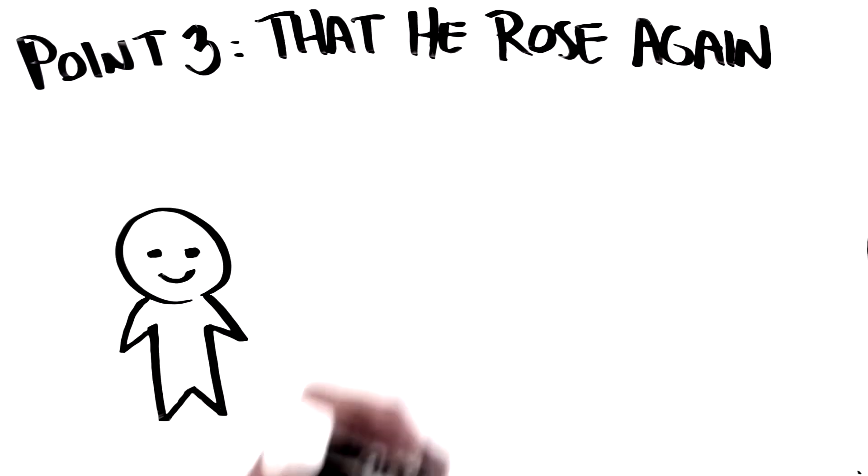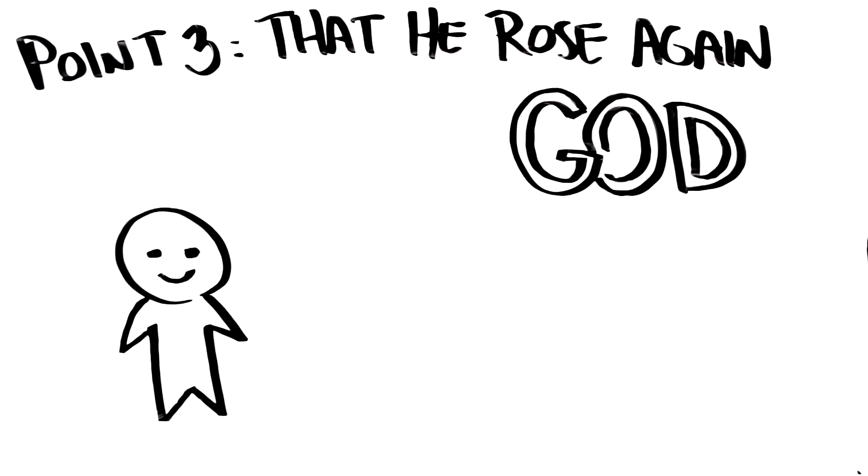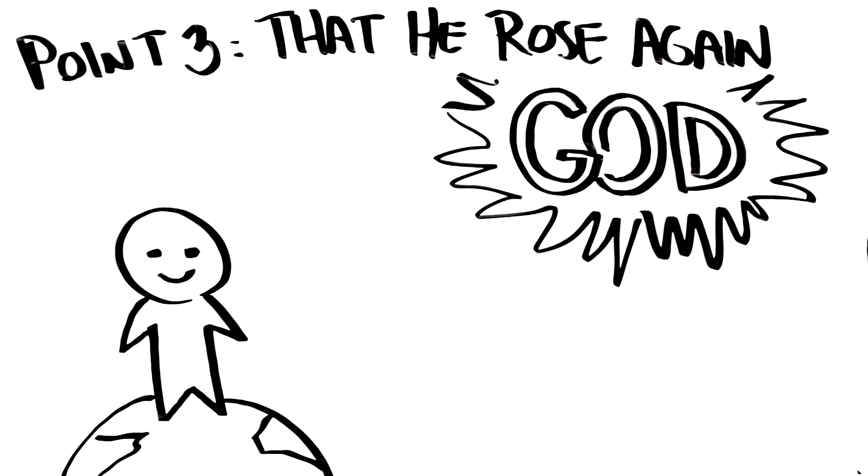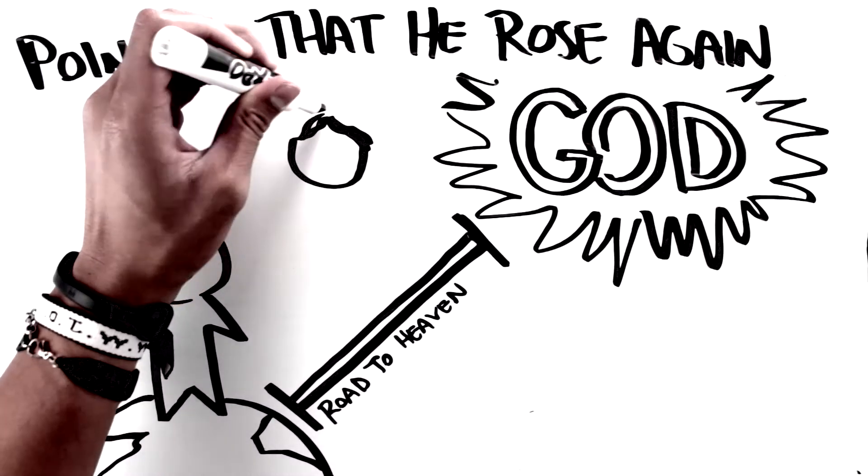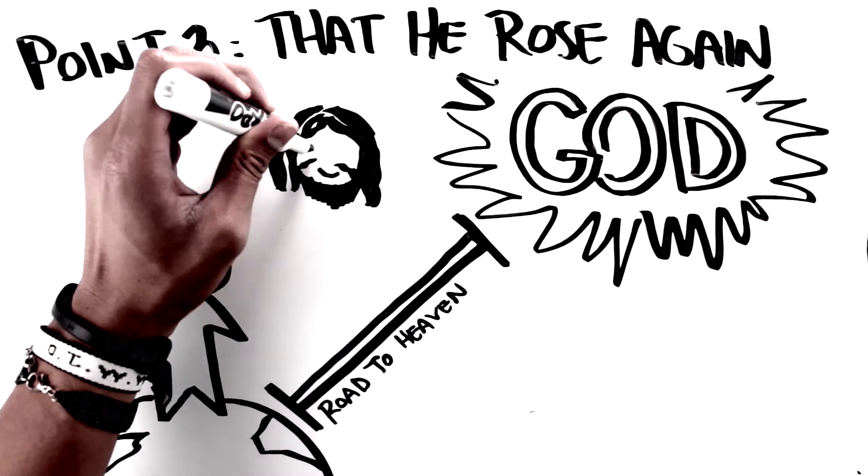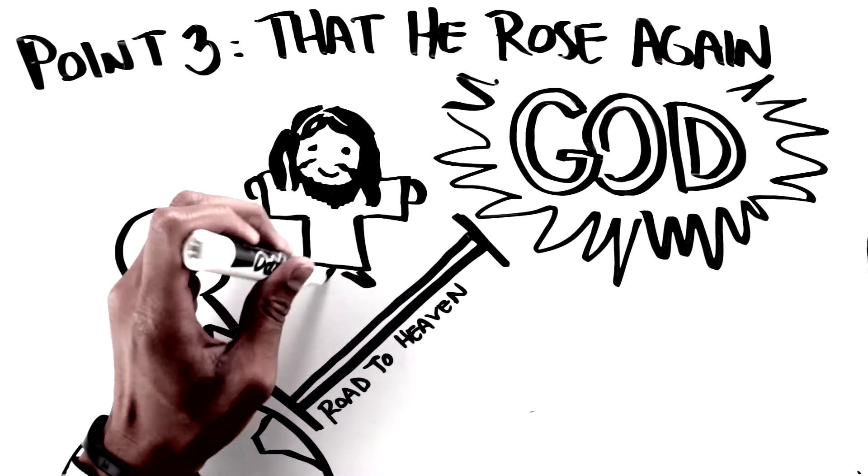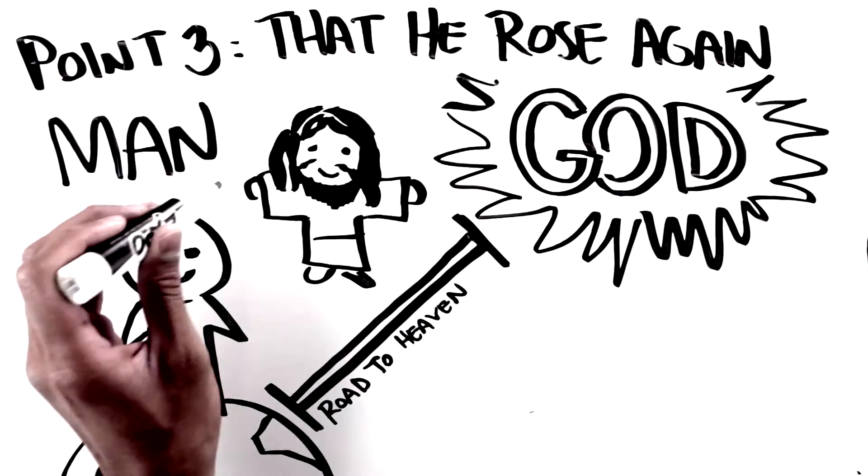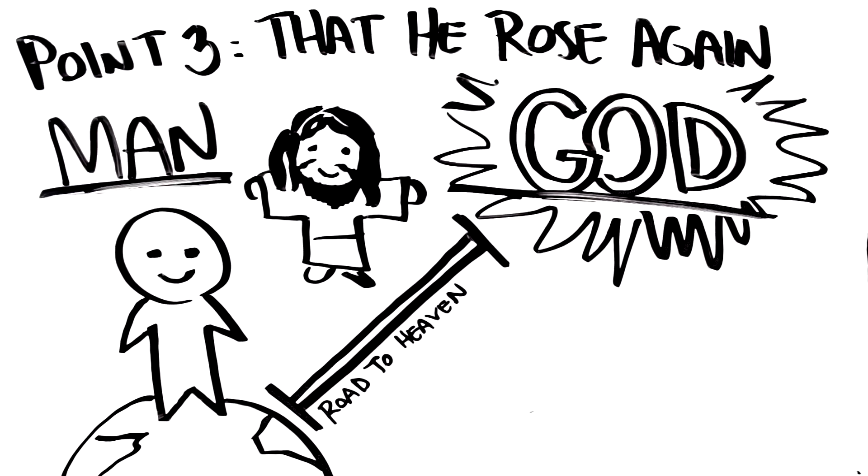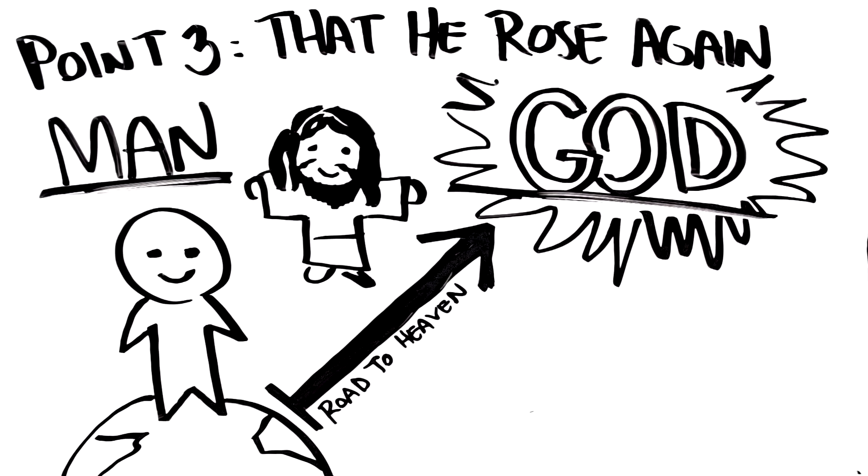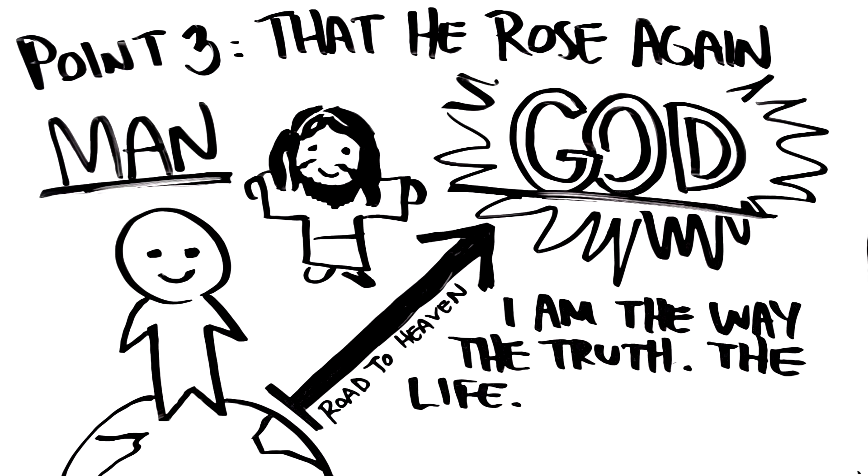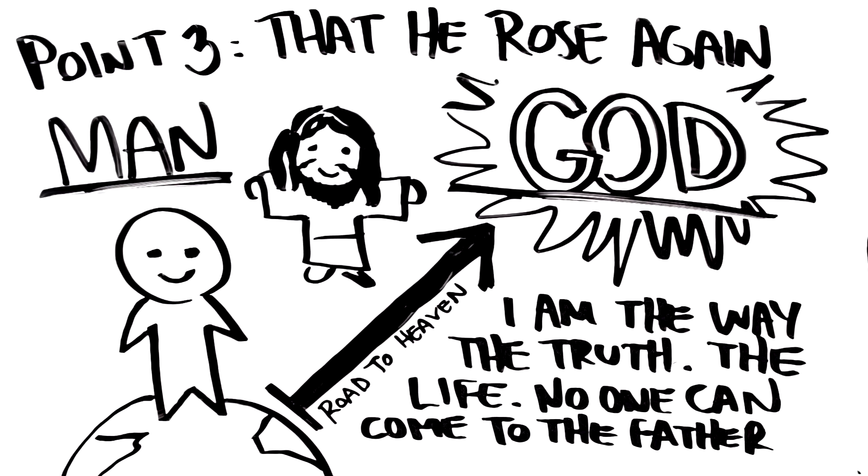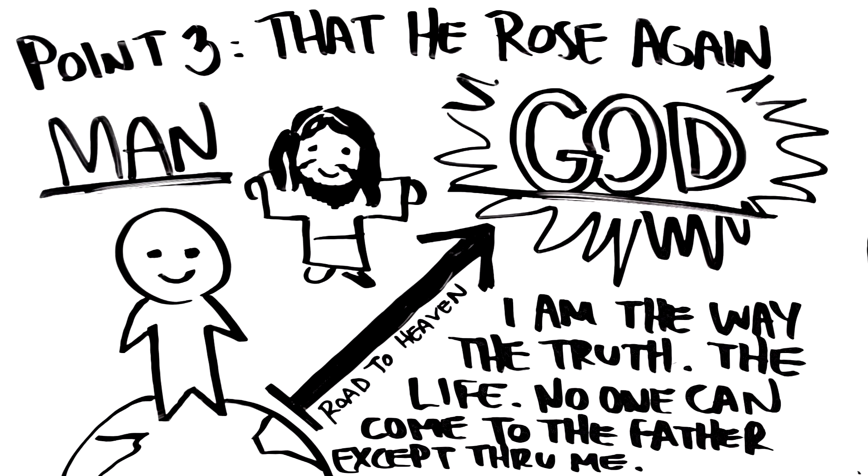Illustration time. You have man and you have God. God is in heaven. Man is here on earth. Man wants to get to God who is in heaven. But in order for man to get there, he must use the only road to get there. The road to heaven and the only way for man to get to God is through Jesus, who is both man and God. Because he is both, he can be the successful connector for God and man. Jesus said, I am the way, the truth, the life. No one can come to the Father except through me.